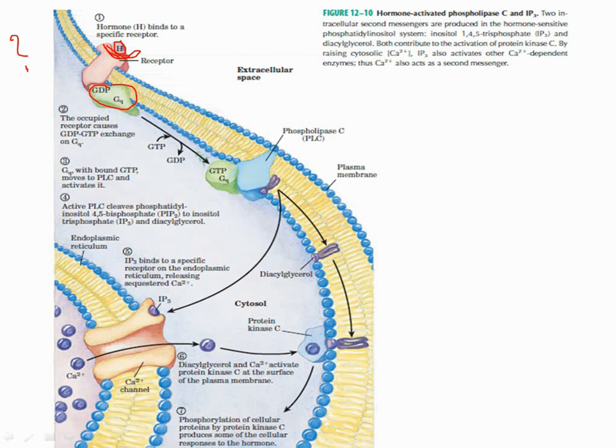G protein-coupled receptor activation occurs by GTP exchange for GDP. When GTP binds to the alpha subunit of the G protein, the beta and gamma subunits are released, and GTP along with the alpha